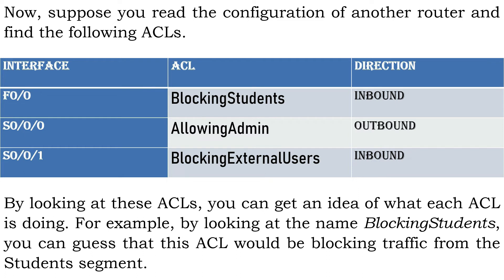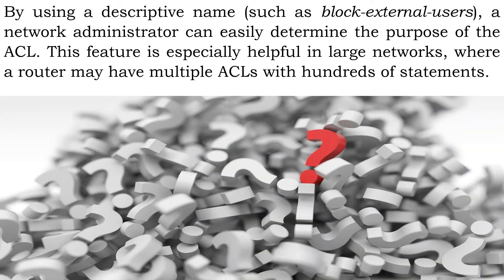For example, by looking at the name 'blocking students', you can guess that this ACL would be blocking traffic from the student segment. By using a descriptive name such as 'block external users', a network administrator can easily determine the purpose of the ACL. This feature is especially helpful in large networks where a router may have multiple ACLs with hundreds of statements.